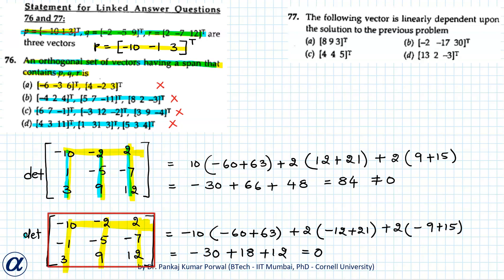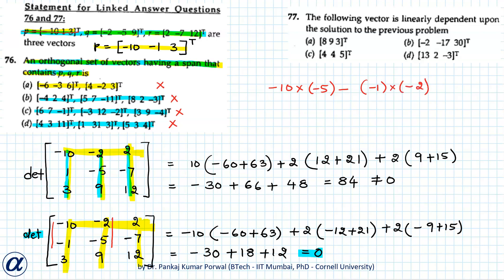The determinant of this corrected matrix is 0, meaning the rank is less than 3. Checking a 2×2 minor: (−1·0)(−5) − (−1)(−2) = 50 − 2 = 48, which is non-zero. So the rank is 2, meaning there are two linearly independent columns. Therefore, among p, q, and r there are only two linearly independent vectors, the dimension of the vector space is 2, and the basis will have two vectors.